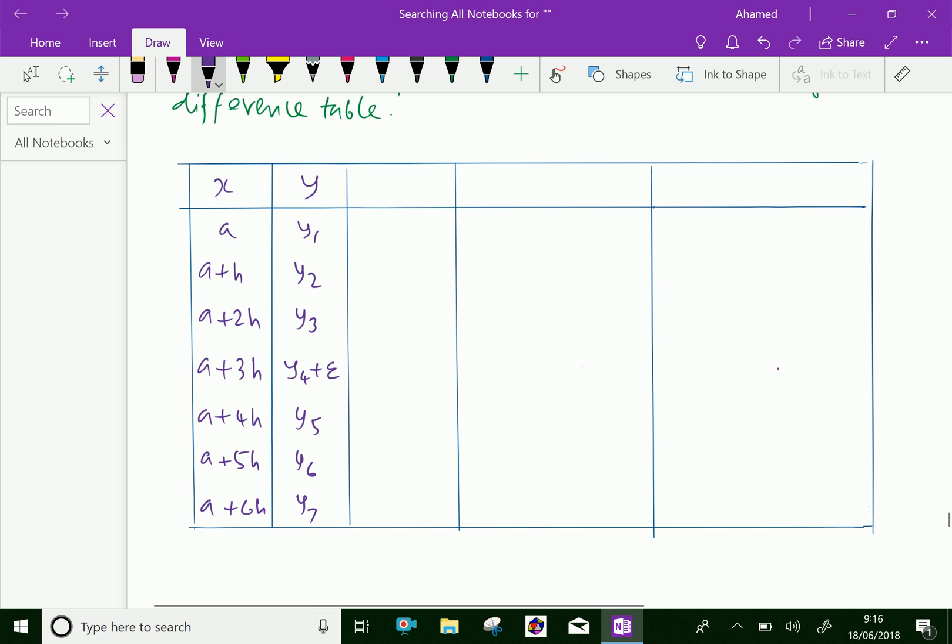Now let us find the first difference, that is delta y. First is y2 minus y1 is the first difference. Then y3 minus y2. Then y4 plus delta e minus y3.